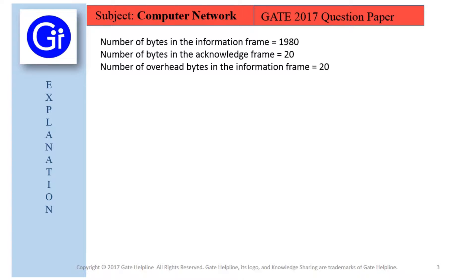So now we will see the explanation to this question. In the question we are given the number of bytes in the information frame as 1980, number of bytes in the acknowledgement frame as 20, number of overhead bytes in the information frame as 20.